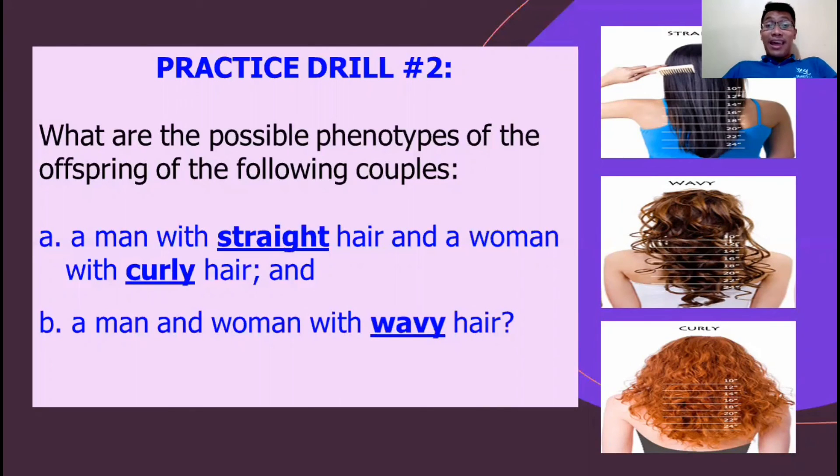The type of hair is an example of incomplete dominance. We have straight, curly, and producing wavy hair. I hope that you can apply what you have learned from this video as you answer this practice drills.